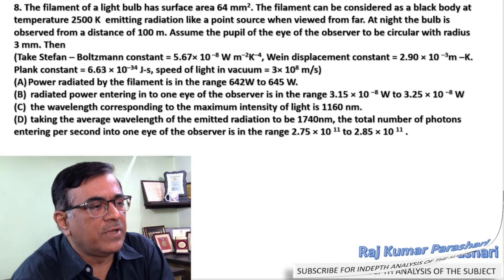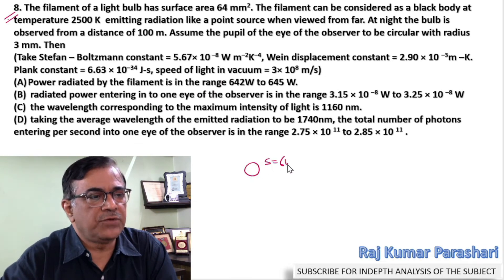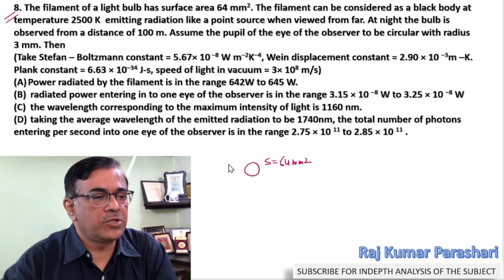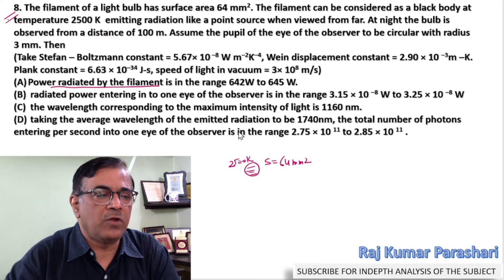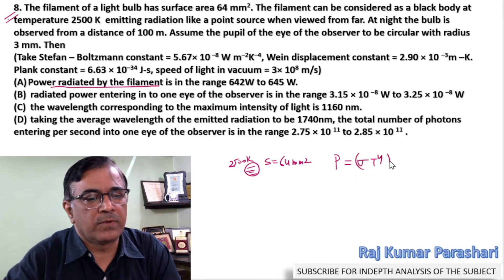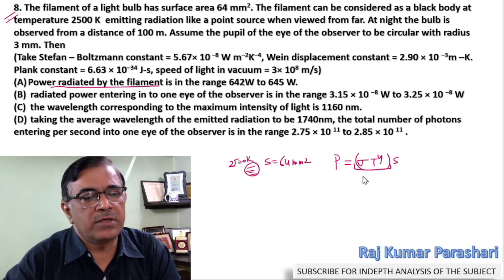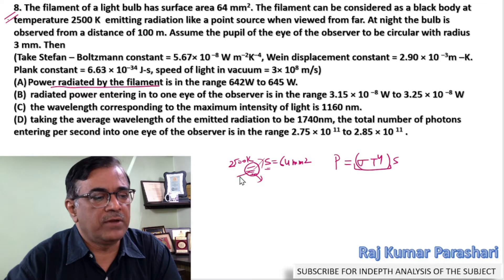Let's proceed with the solution of question number 8. In this problem, we have a filament of surface area S equals 64 mm². The temperature of the filament is 2500 Kelvin, and we need to treat this as a perfect black body. We need to calculate the power radiated by the filament, which is given by sigma times T to the power 4 times S — the energy radiated per unit area per unit time — so the energy emitted in all directions per second is given by this expression.